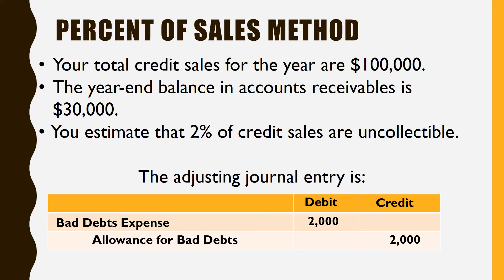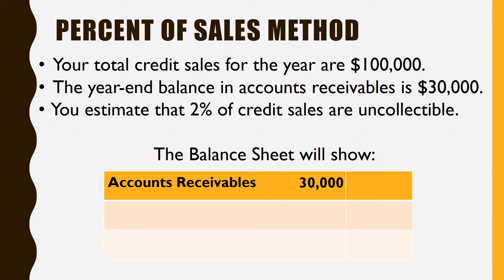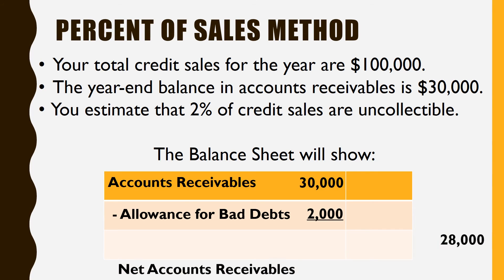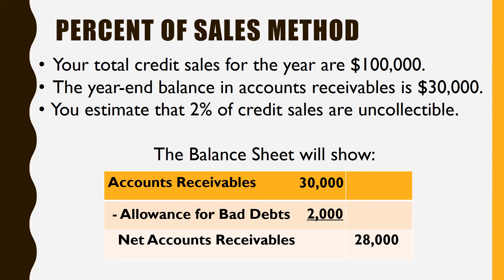Don't get confused — there's never any change in that entry. The way this shows on the balance sheet is the allowance for bad debts comes right after your accounts receivable, so you'll have net accounts receivable of twenty-eight thousand dollars.